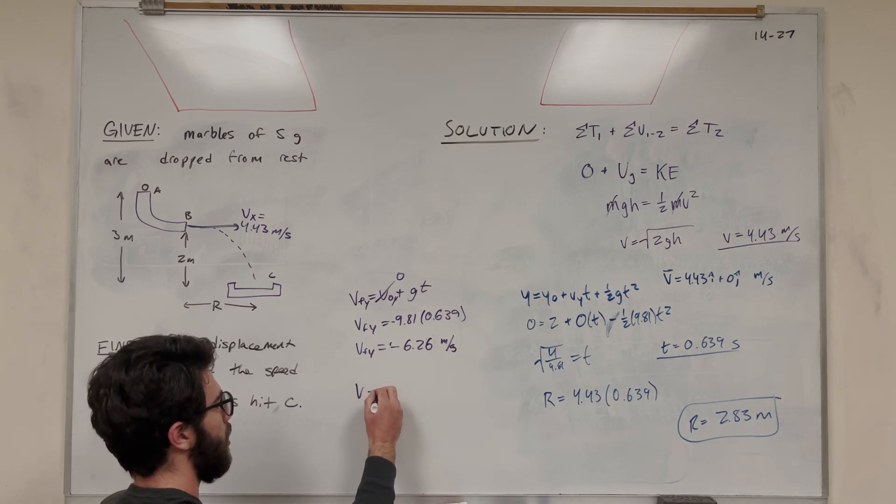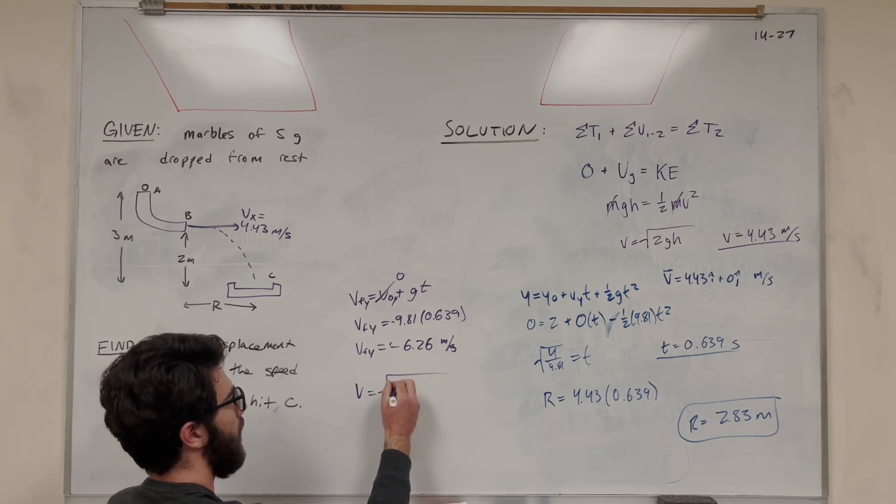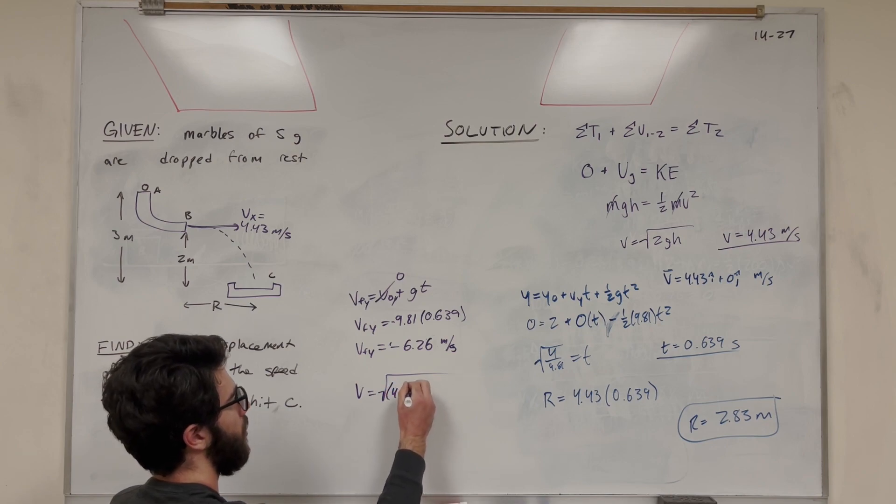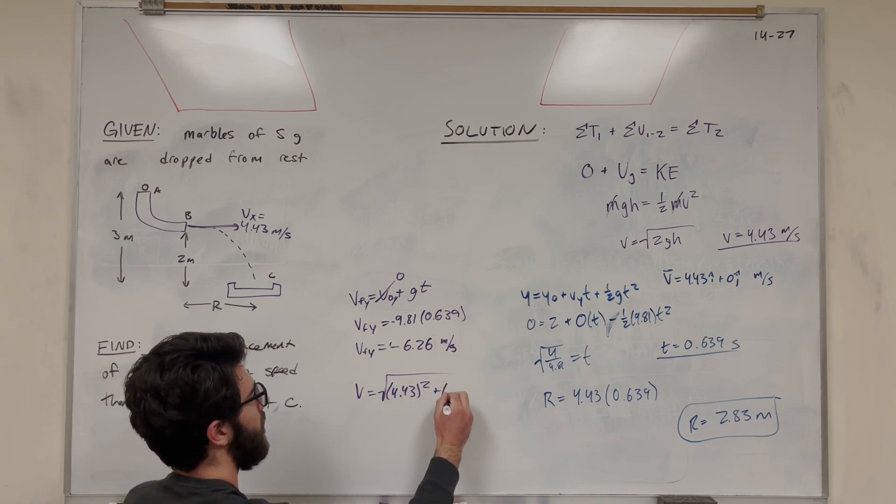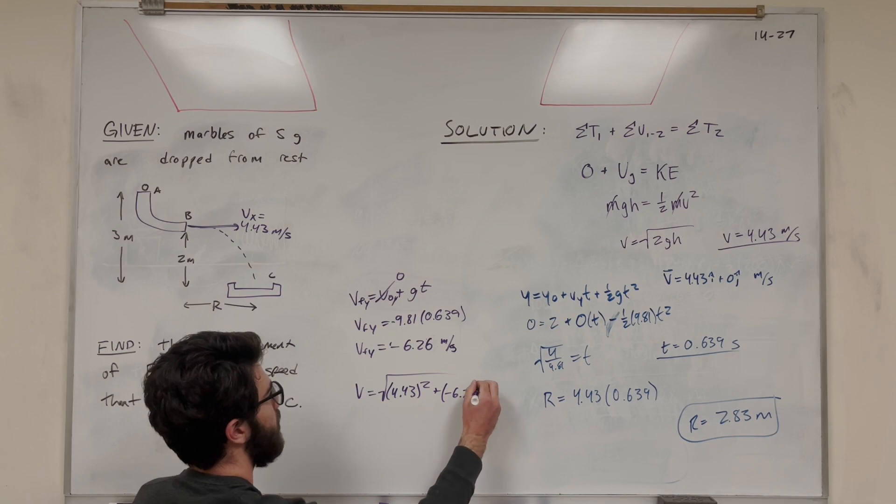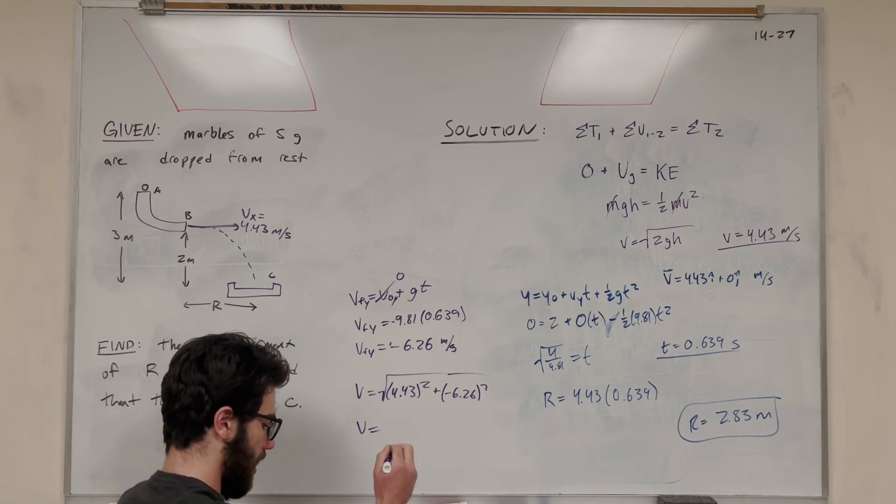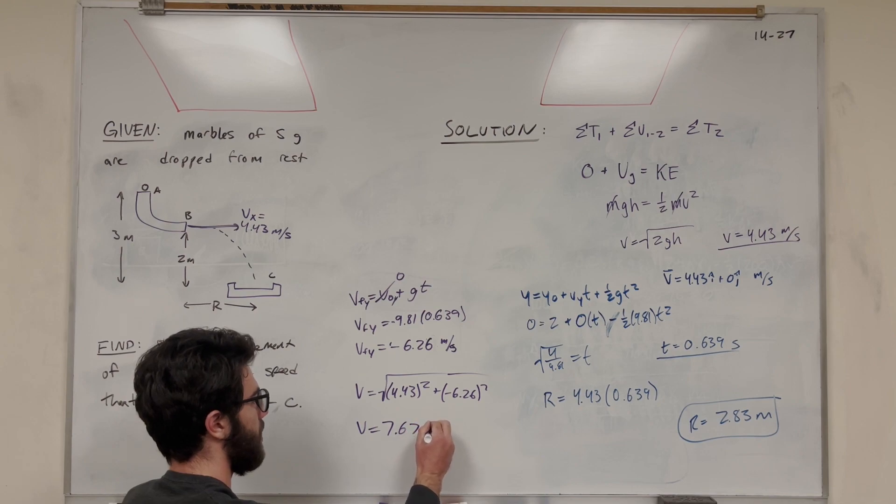So we want to find the magnitude of that velocity or speed - take the square root of x, which is 4.43 squared, plus negative 6.26 squared. And you get that that speed is equal to 7.67 meters a second.